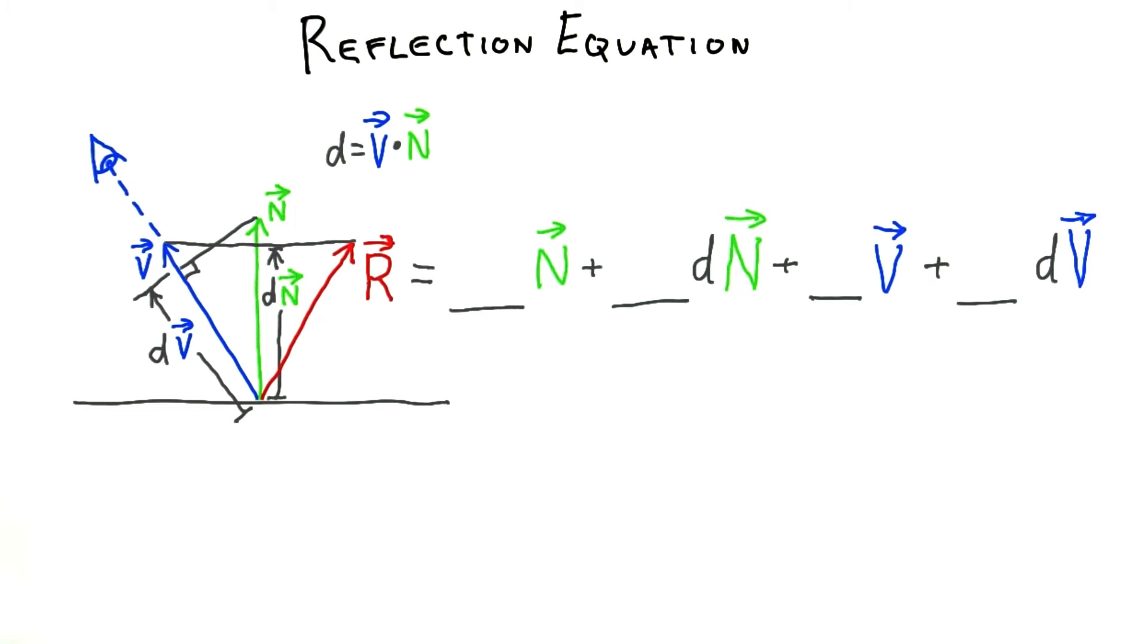Here's our normalized reflection vector r. This is our goal. The question to you is, given these four vectors, how do we compute this normalized reflection direction vector?